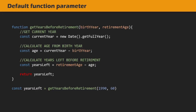For example, here we are creating a simple function called 'getYearsBeforeRetirement'. This function takes two parameters: birth year and retirement age. Based on the birth year, we calculate the age of the person, and then we subtract the age from the official retirement age to calculate how many years are left before retirement. Then we return that value.